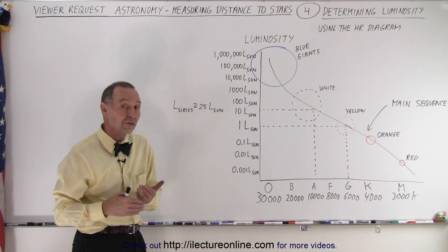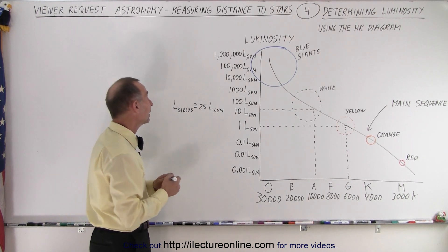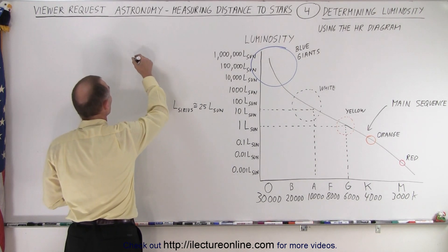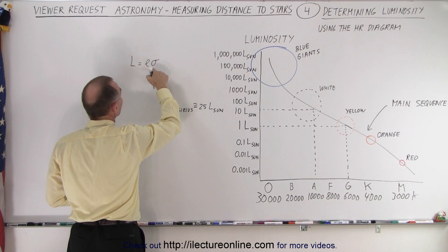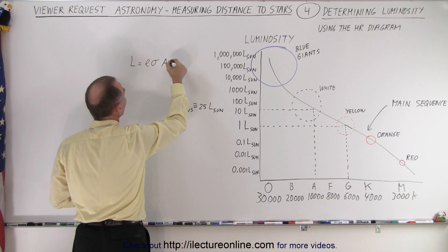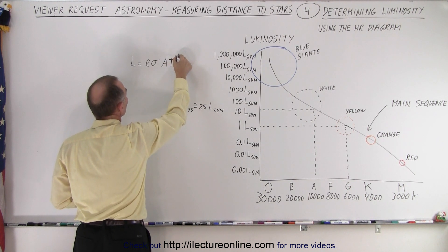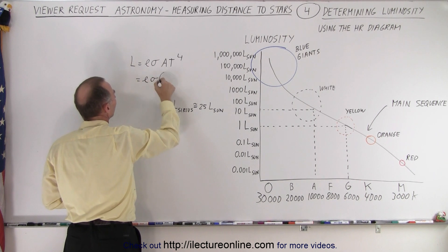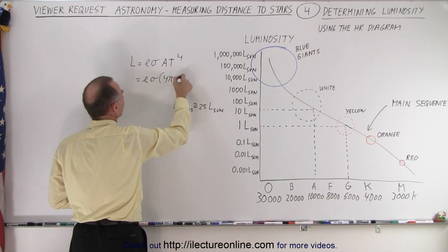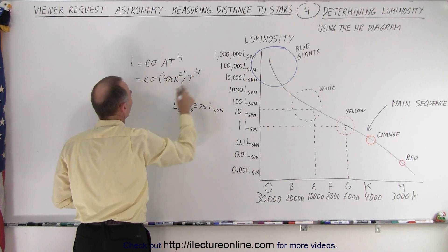Of course we can also use the Stefan Boltzmann's law that calculates that the amount of the luminosity is equal to the emissivity times the sigma constant times the surface area times the temperature to the fourth power. And of course the surface area can be written as 4πr² times the temperature to the fourth power.